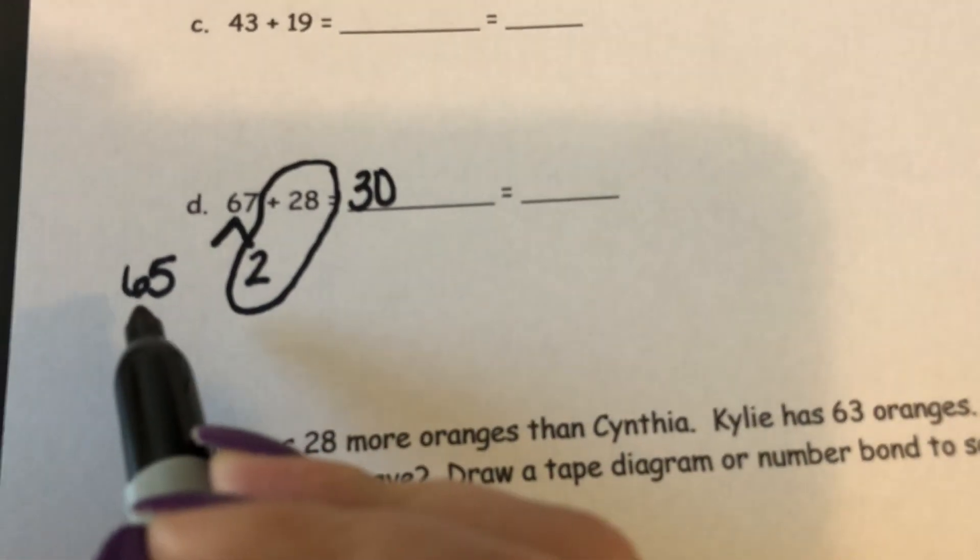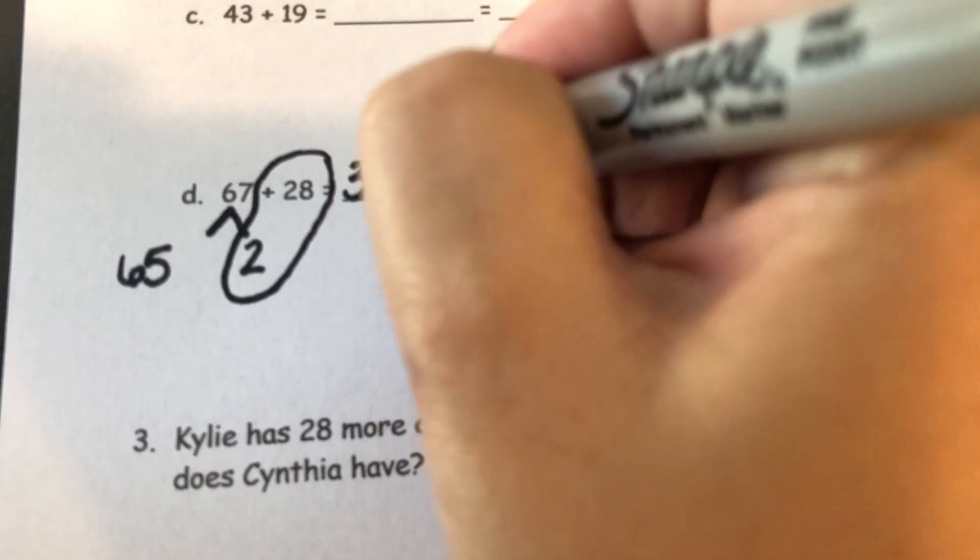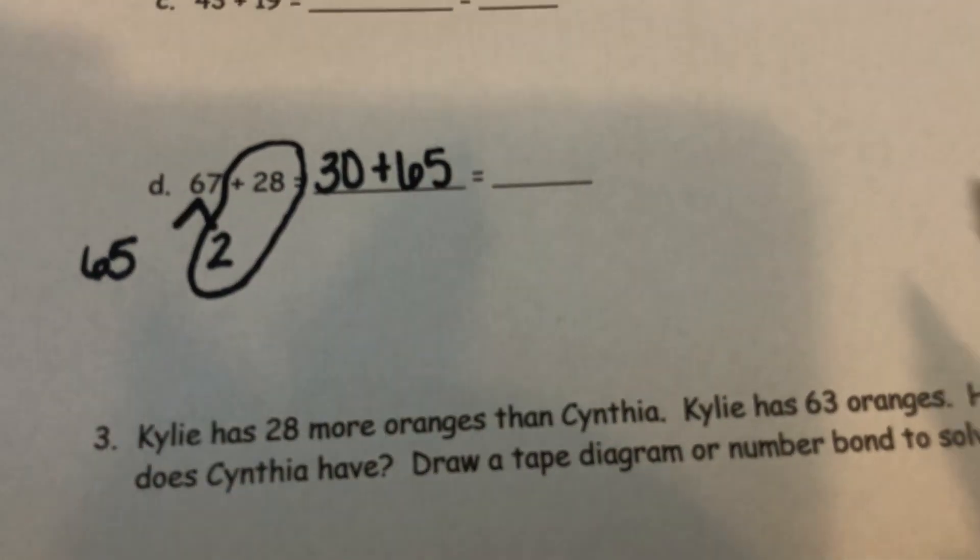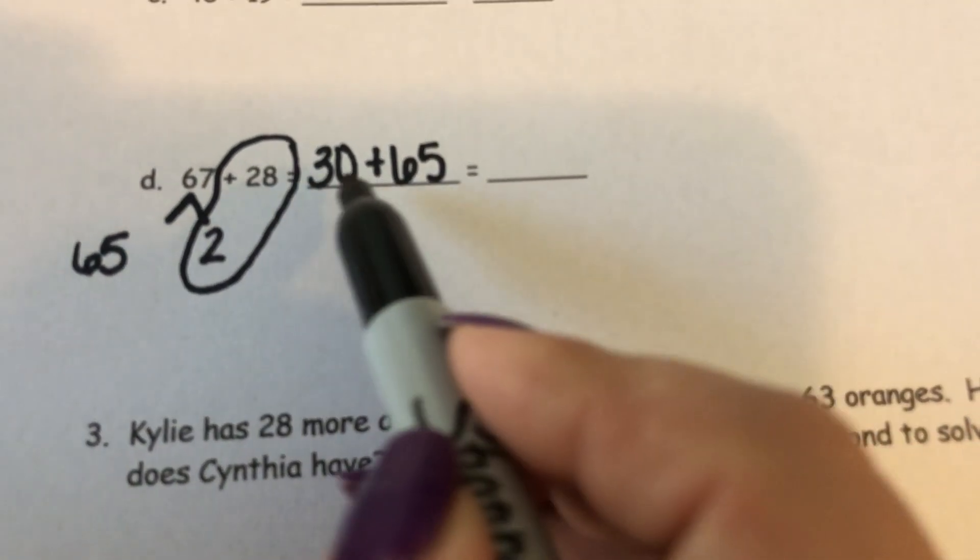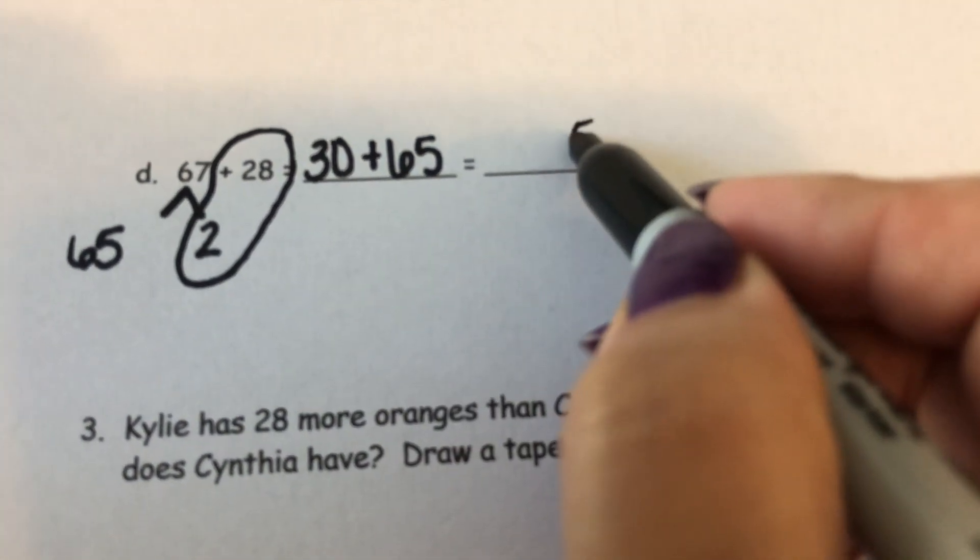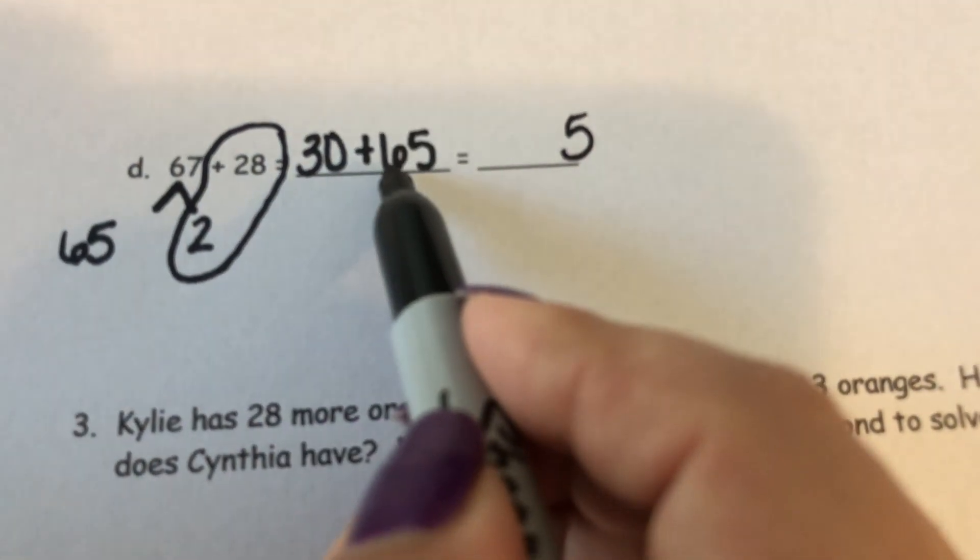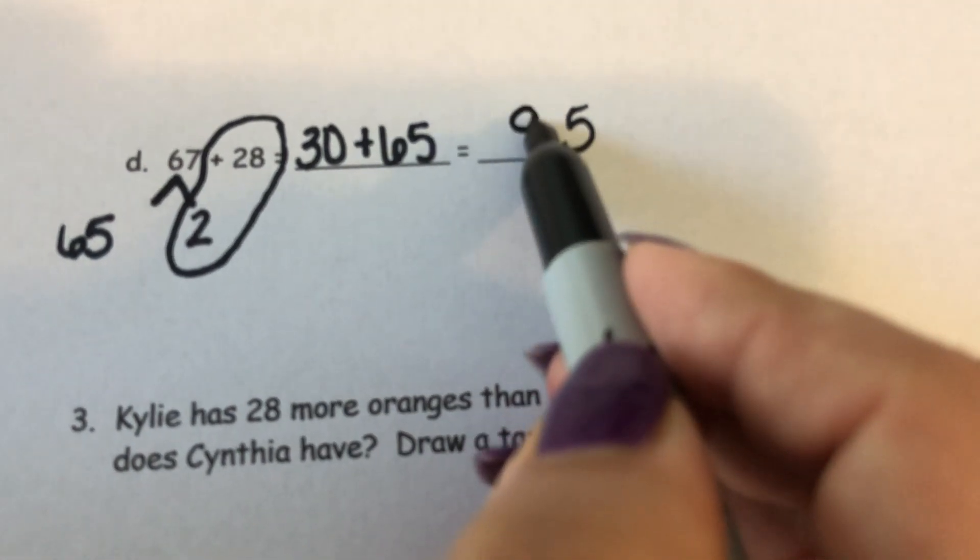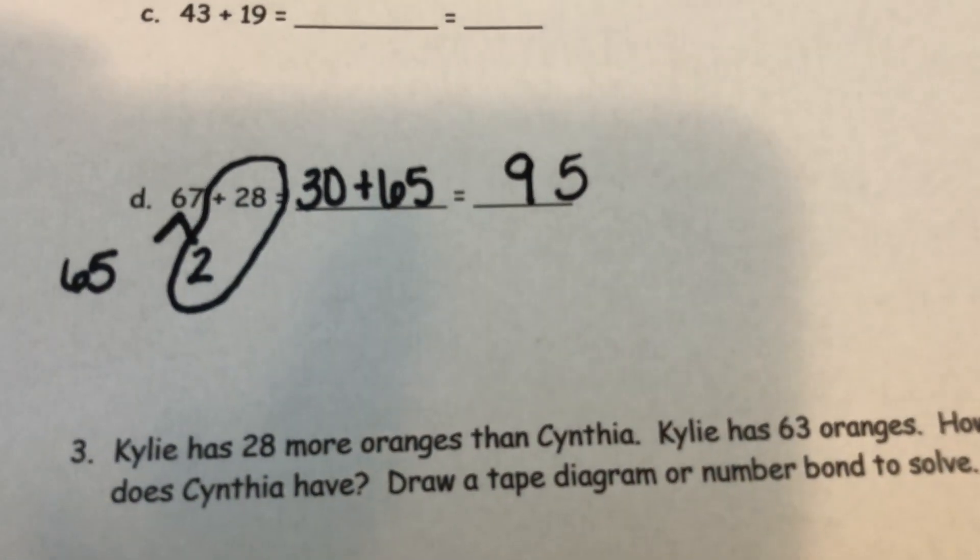And I need to add the 65 back in. Now I can add like units. 5 ones plus 0 ones is 5 ones, and 6 tens plus 3 tens is 9 tens to get the answer of 95.